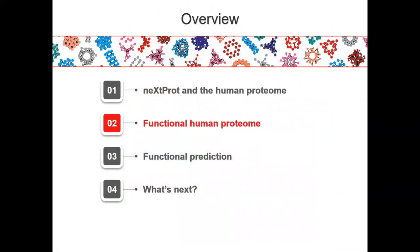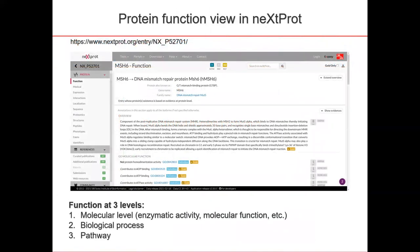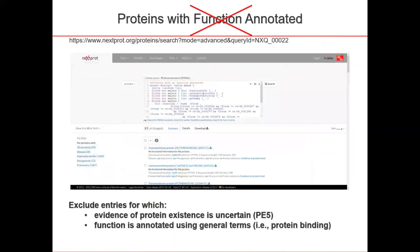Let's now turn to the functional human proteome. What do we know about the function of these human proteins? In NEXTProt, we have this information in the protein function view. I've shown here the example for MSH6, which is a DNA mismatch repair protein, and we provide information about function at three different levels: at the molecular level, what biological processes it's involved in, and what pathways it is in. To look at how many proteins do not have a function associated, we have SPARQL query 22, in which we exclude proteins which are PE5 and those which have annotations to very general gene ontology terms, i.e. protein binding. We see that there are 1,669 such entries in NEXTProt.